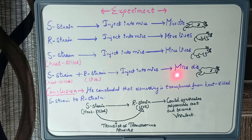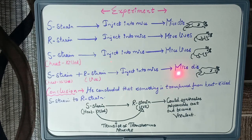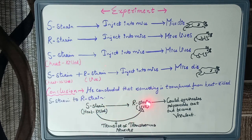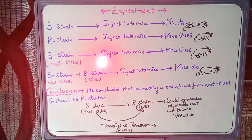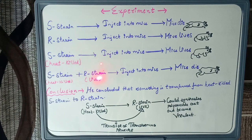Although the mice should have lived — because the S strain was heat-killed and therefore non-virulent, and R strain is also non-virulent — the mice still died. The conclusion drawn by Griffith was that something from the S strain had been transferred into R strain, which made R strain synthesize a polysaccharide coat and become virulent.